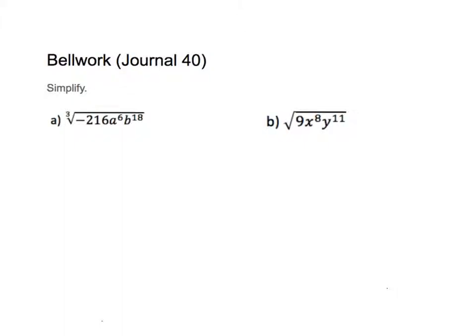We have journal 40 here with two problems to look at. These are both simplifying problems of the root. This one is a cube root. Anytime you're taking a root, you want to handle the numbers first, separately from the variable. To take the cube root of a negative number, we'll make a factor tree. Two numbers that multiply to give you 216 are 36 times 6.